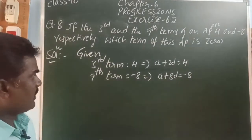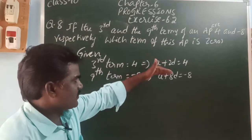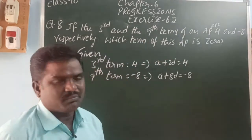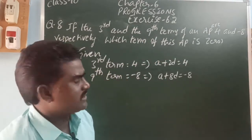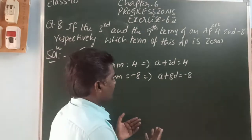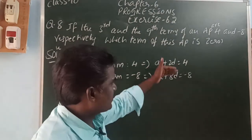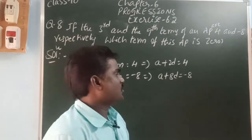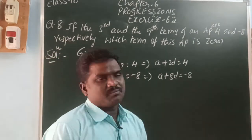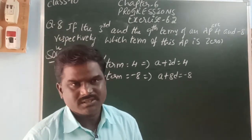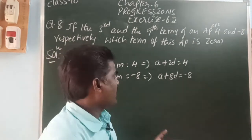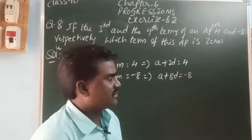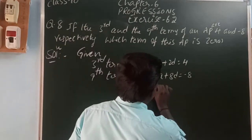So, first, find the arithmetic progression — form an arithmetic progression. How we can find? By using the first term and common difference. How we can find the first term and common difference? Using these two equations. These two equations are a pair of linear equations in two variables. So, how we can find? By using either elimination method or substitution method. So, here, we can use the elimination method.